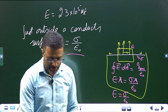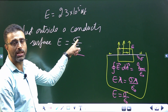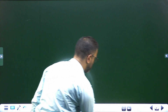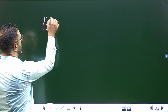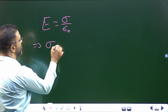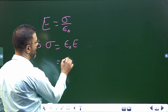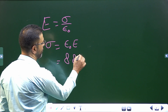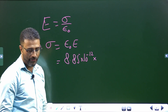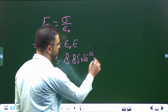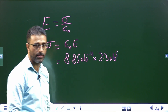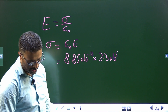So we have to find out the surface charge density sigma, and E is given. From E equals sigma divided by epsilon naught, we get sigma equals epsilon naught times E. Epsilon naught is 8.85 × 10⁻¹² in SI system, and the field given is 2.3 × 10⁵ Newton per coulomb, also in SI system.